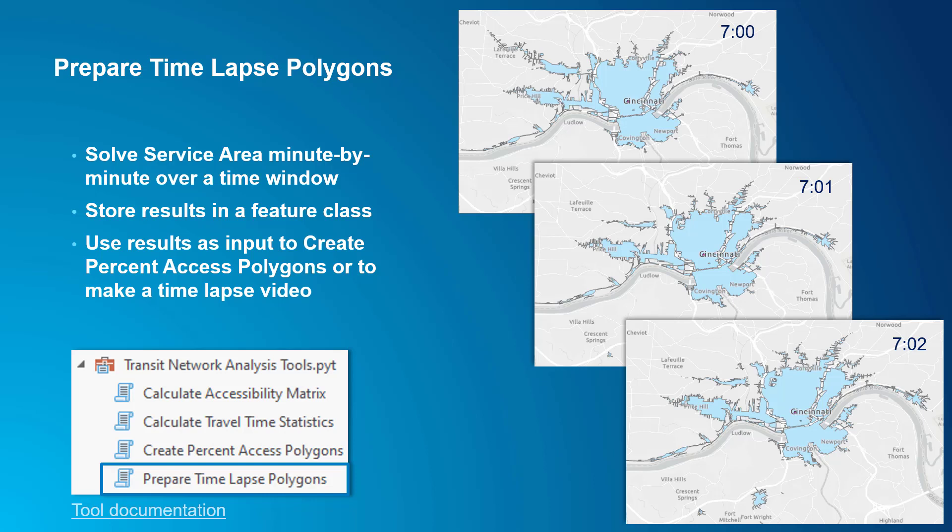It solves the service area incrementally over a time window and writes the resulting polygons to a single feature class with a field indicating the timestamp for each polygon. You can use the results to create a time-lapse video showing how the service area evolves, or use them as input to the Create Percent Access Polygons tool to produce a more analytically meaningful result. The tool also parallelizes service areas across multiple processors for maximum efficiency.